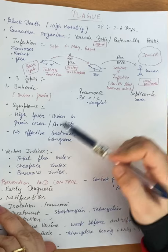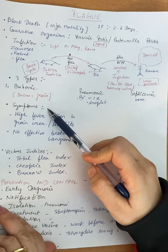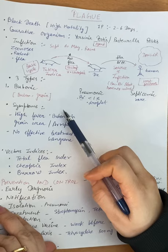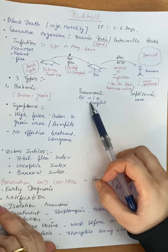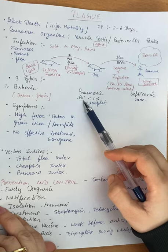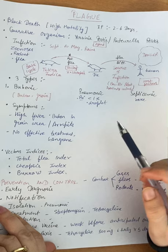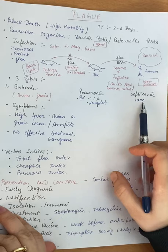The bacilli travel from lymph vessels to blood vessels, then through the blood to the lungs — this is secondary pneumonic plague, which develops after bubonic plague. Primary pneumonic plague is very rare, less than one percent. Septicemic plague occurs when Yersinia pestis bacteria are present throughout the blood; it is also very rare but extremely dangerous.